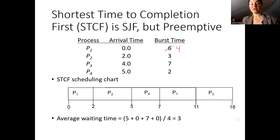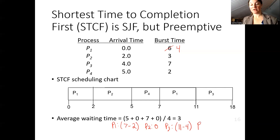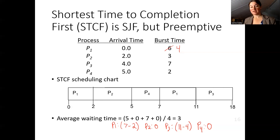Process one started at time zero but was taken off at time two, re-entering the ready queue and not scheduled again until time seven. Process two entered at time two and did not wait, going directly onto the CPU. Process three entered at time four but wasn't scheduled until time eleven, giving a wait time of seven. Process four had a wait time of zero. Only the decision at time two was truly preemptive; at times five, seven, and eleven, processes willingly gave up the CPU, but it is still considered a preemptive scheduling algorithm.